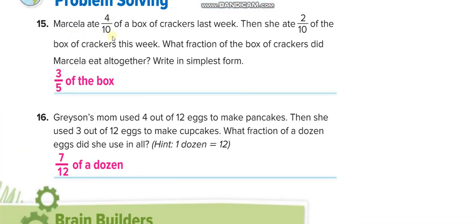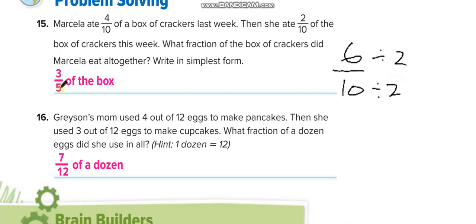Marcella ate 4 over 10 of a box of crackers last week, then she ate 2 over 10 more. So 4 plus 2 is 6, giving 6 over 10. Then simplify by dividing by 2 up and down: 6 divided by 2 is 3, and 10 divided by 2 is 5, giving 3 over 5.